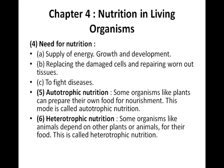The fifth topic is autotrophic nutrition. What is autotrophic nutrition? Some organisms, like plants, can prepare their own food for nourishment — this mode is called autotrophic nutrition. The term 'autotrophic' itself means that some organisms prepare their nutrition on their own. A very common example is the plant. Plants are known as autotrophs because they prepare their own food for nourishment and growth.